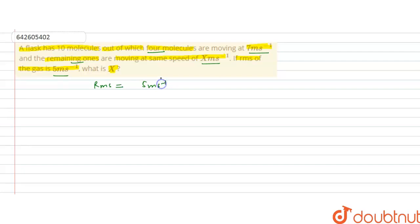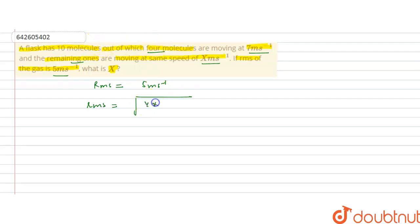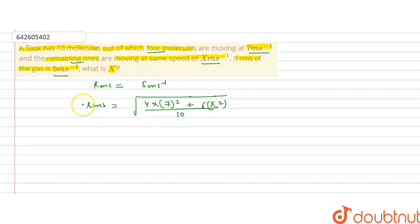The RMS speed given to us is 5 meters per second. RMS means root mean square speed, so it equals the square root of the mean of the squared speeds. The 4 molecules moving at 7 m/s contribute 4 times 7 squared, and the remaining 6 molecules contribute 6 times x squared, all divided by the total number of molecules, which is 10.